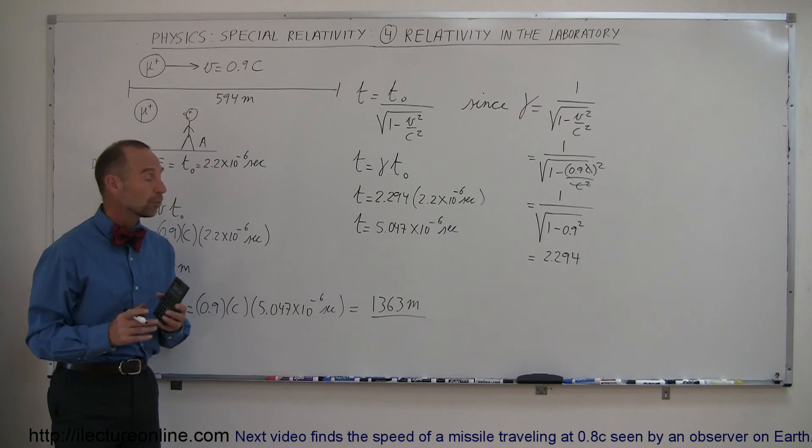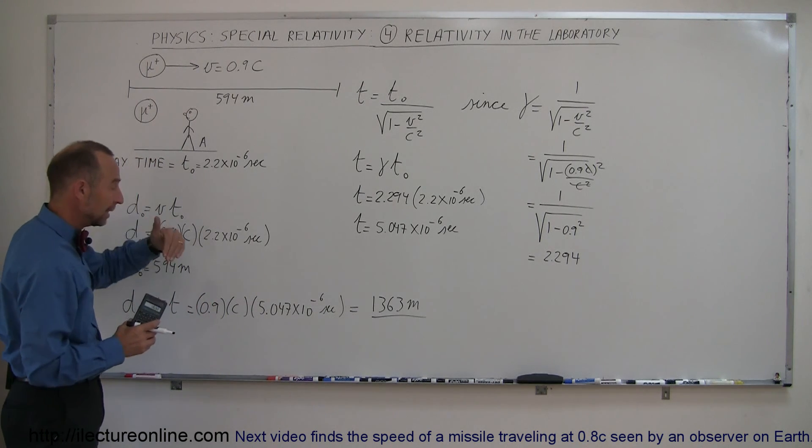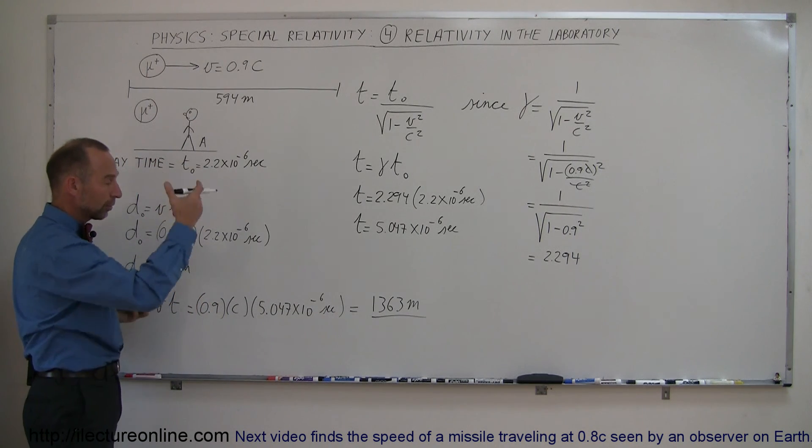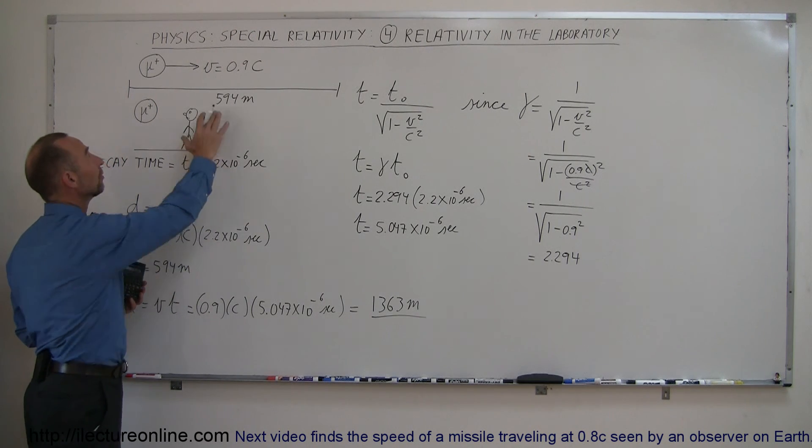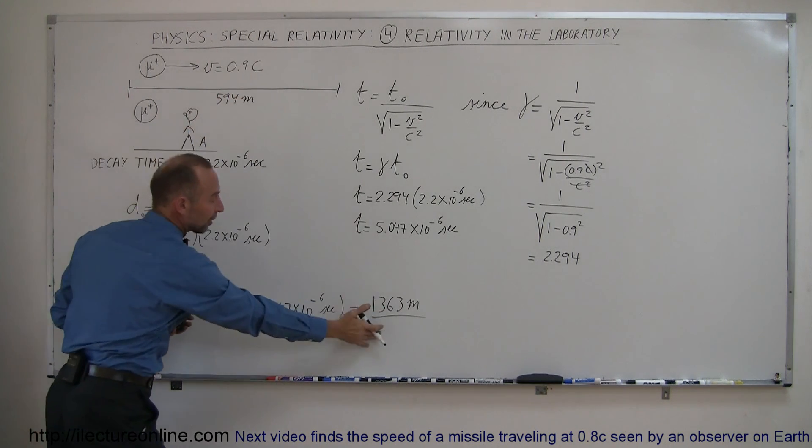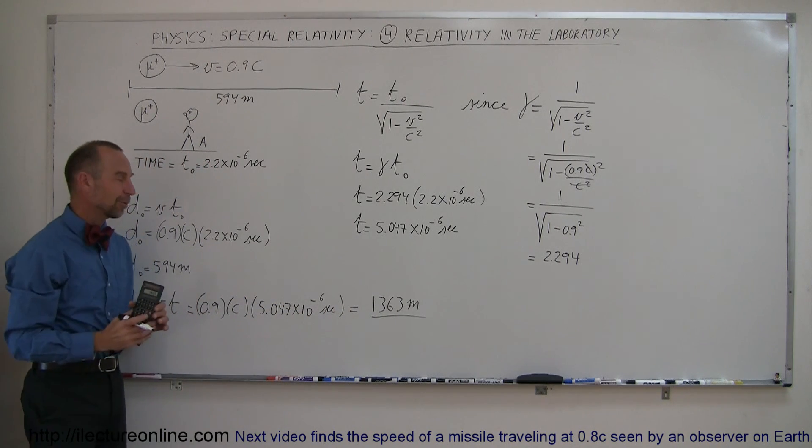Now this is something that's actually been observed in the atmosphere. Particles coming into the atmosphere will travel through the atmosphere a certain distance, and depending upon how fast they're moving, the faster they move, the farther they will travel before they decay. So it's something we've actually observed.